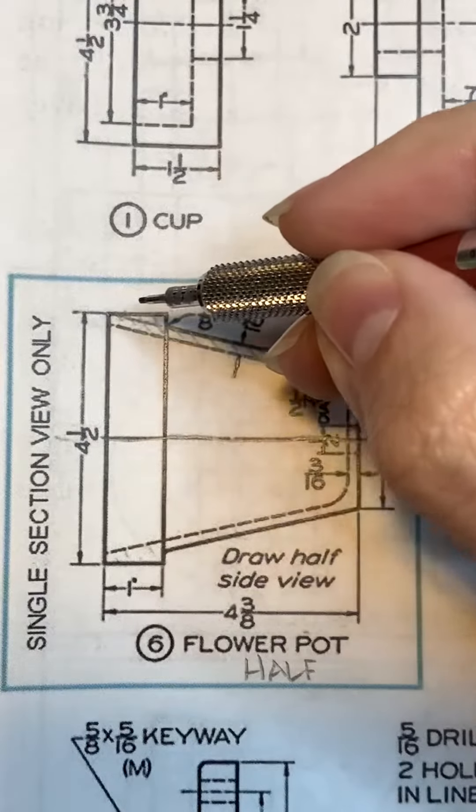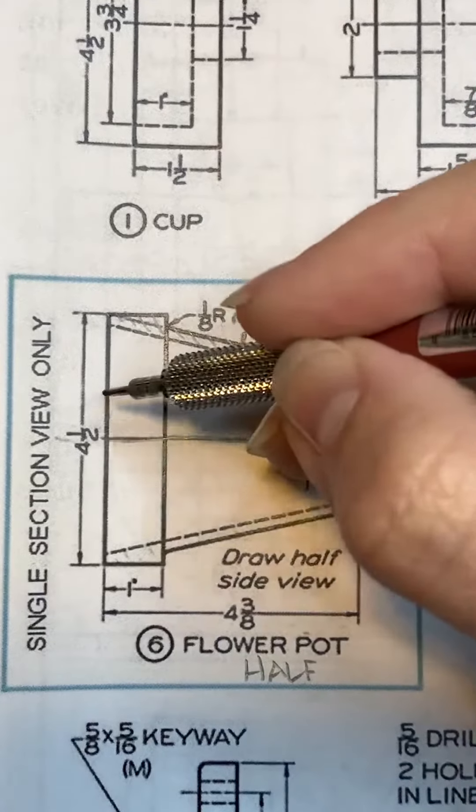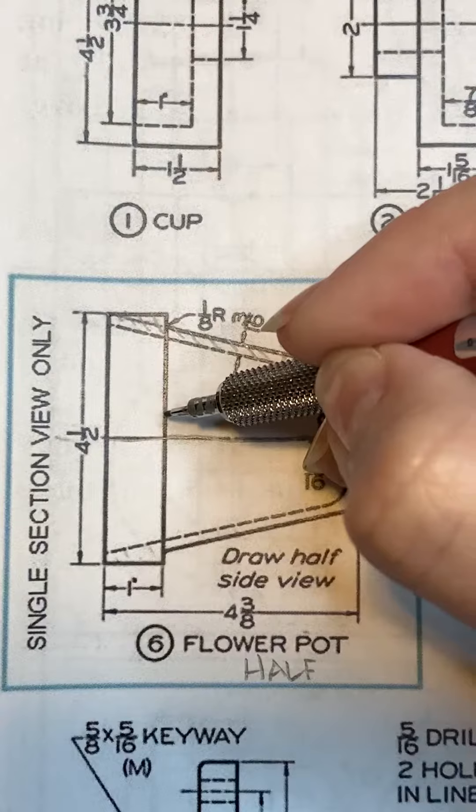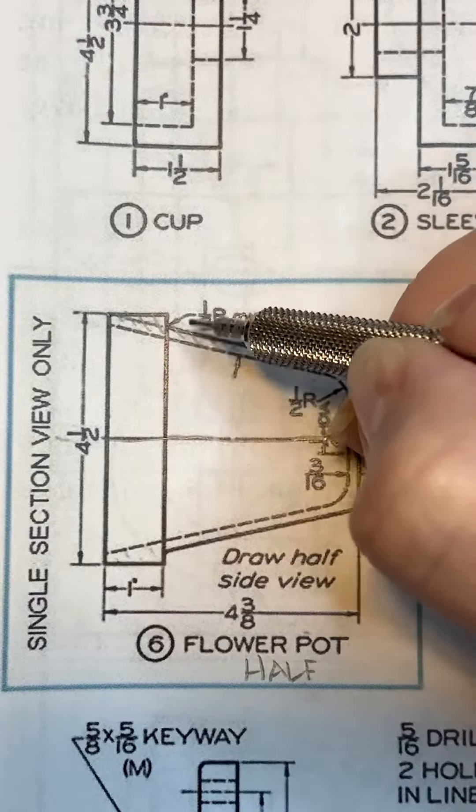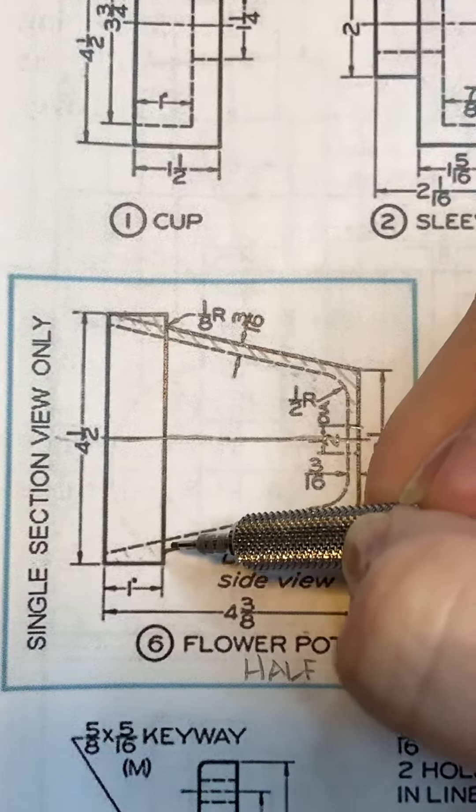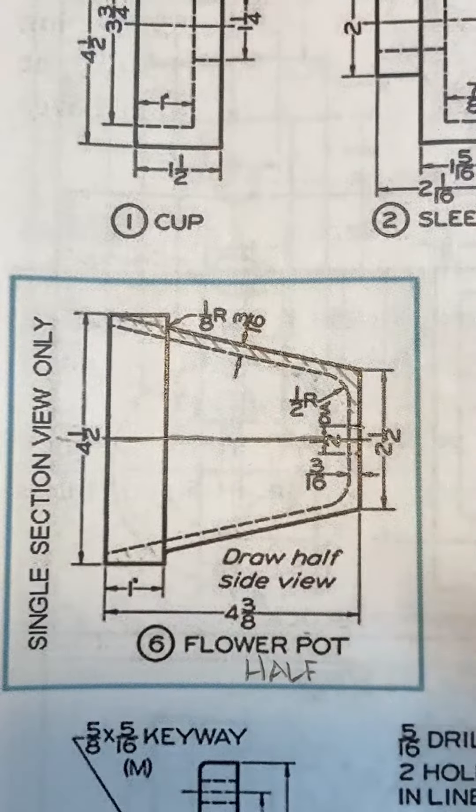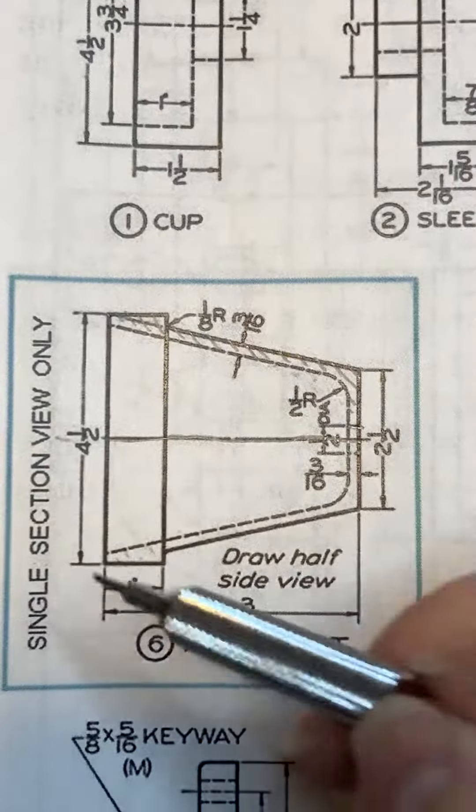The top portion of this, think about what's going to go away because you're cutting it and showing me the inside. Don't forget your little fillets here and here. You do not have to dimension this part.